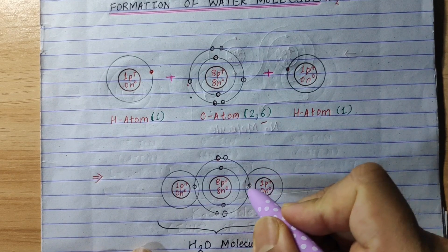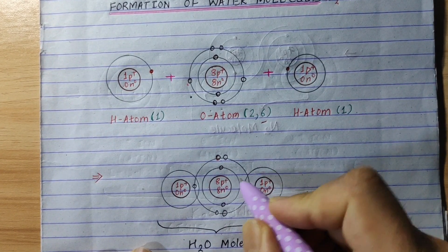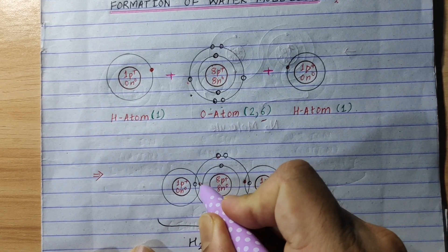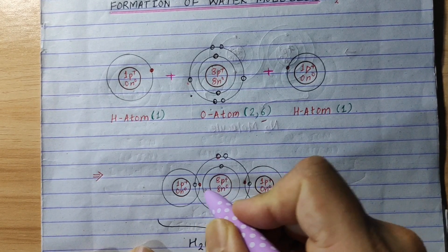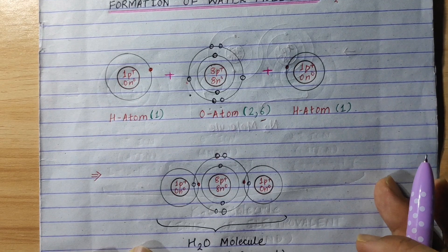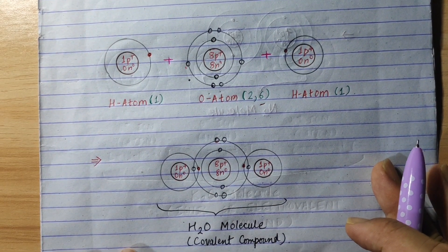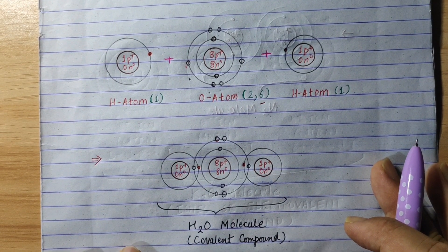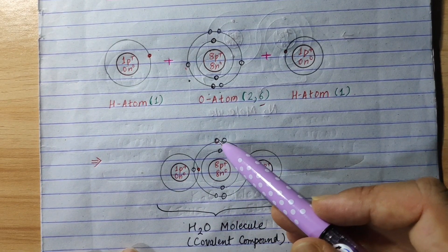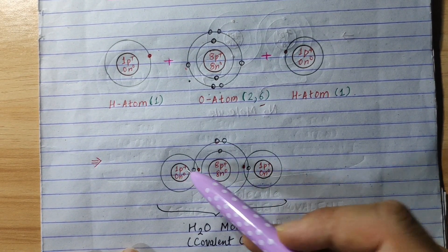Oxygen is now filled in the second shell. Now hydrogen is also equal in the second shell. Finally, we have formed a covalent compound. For oxygen, we count: 1, 2, 3, 4, 5, 6, 7, 8 electrons.